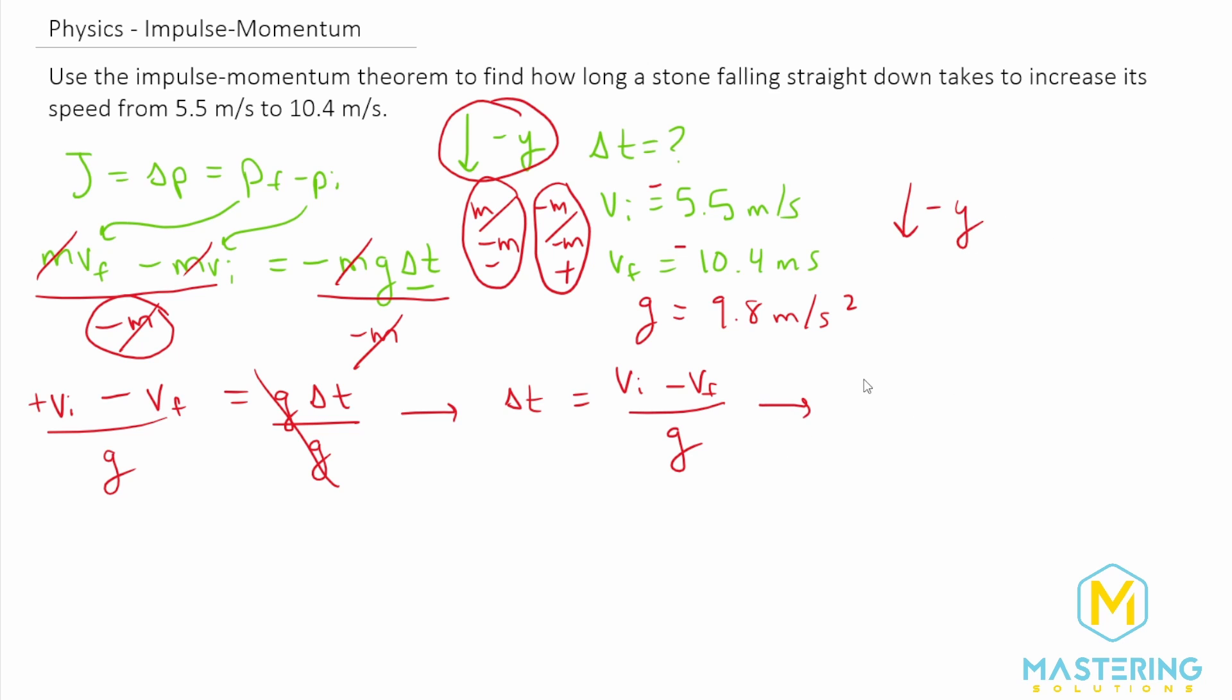So when we plug that in, we have a negative 5.5 meters per second minus a negative 10.4 meters per second. And then we'll divide that whole thing by 9.8 meters per second squared. So now the meters per second will cancel out and we'll be left with one extra time. So we have the correct unit.